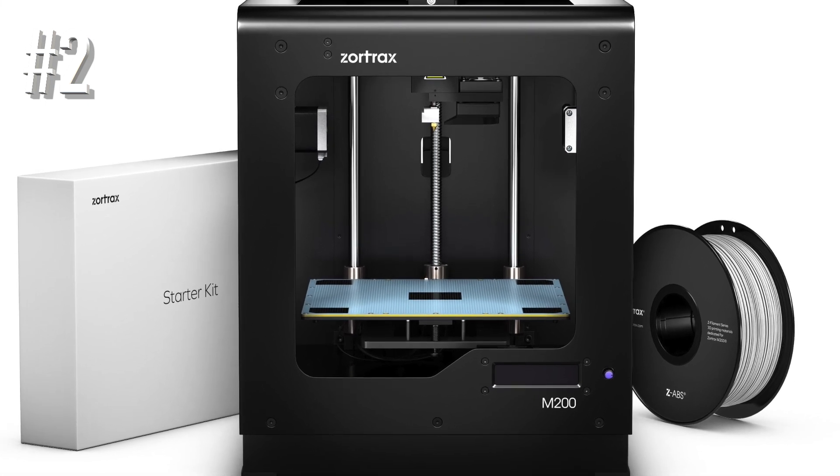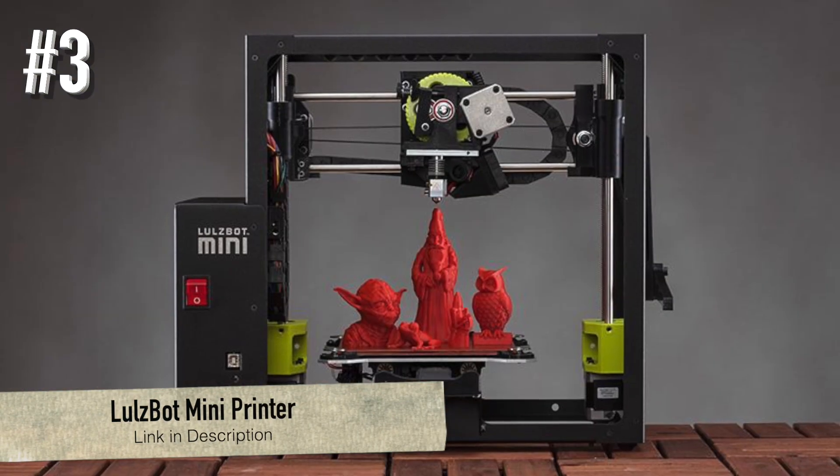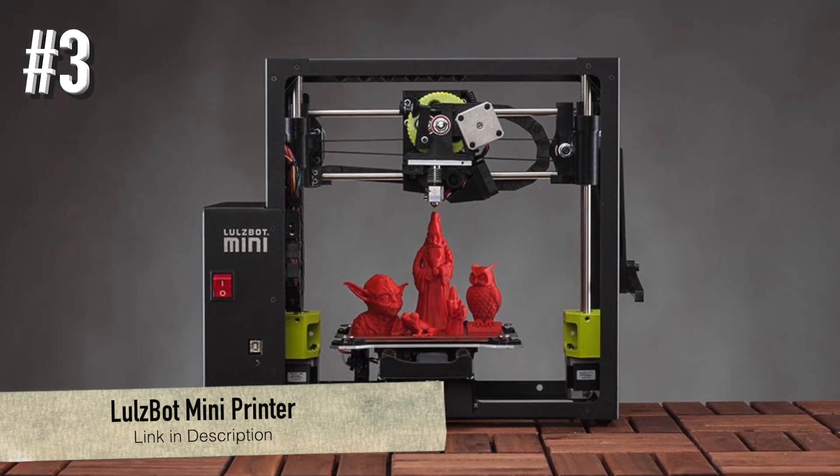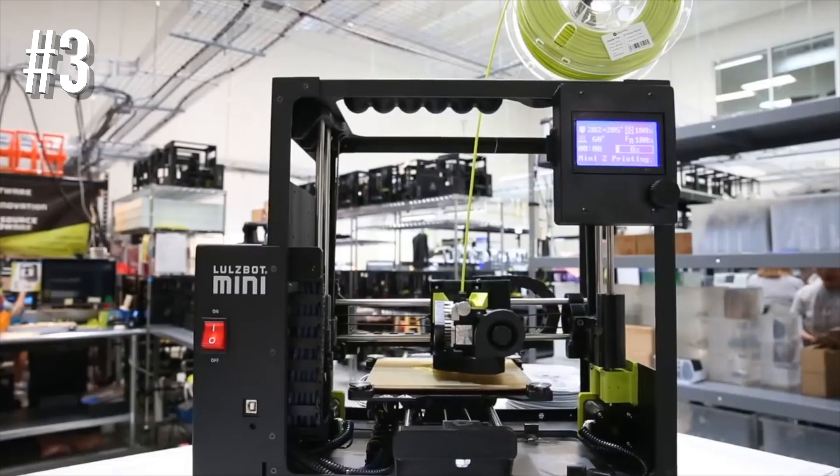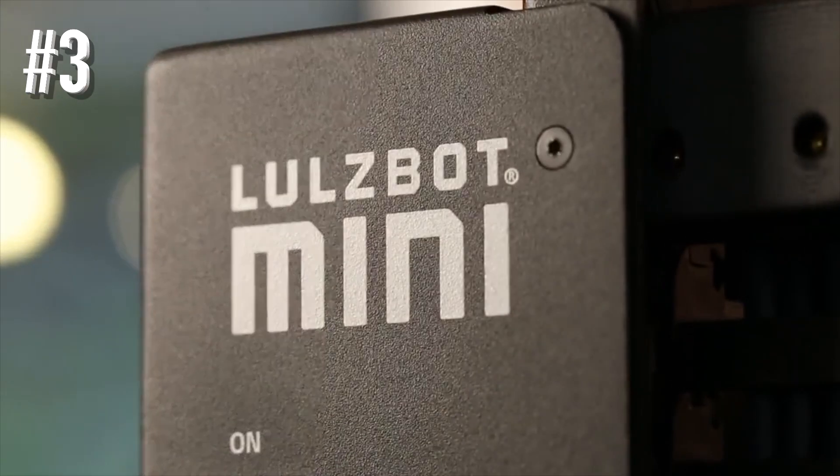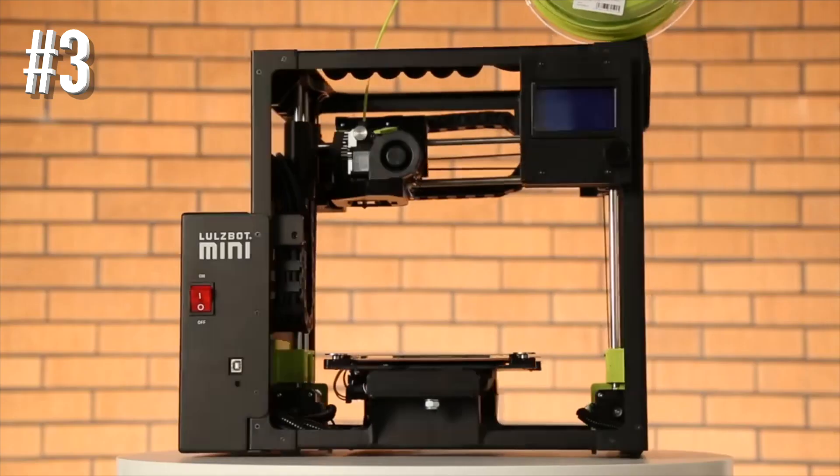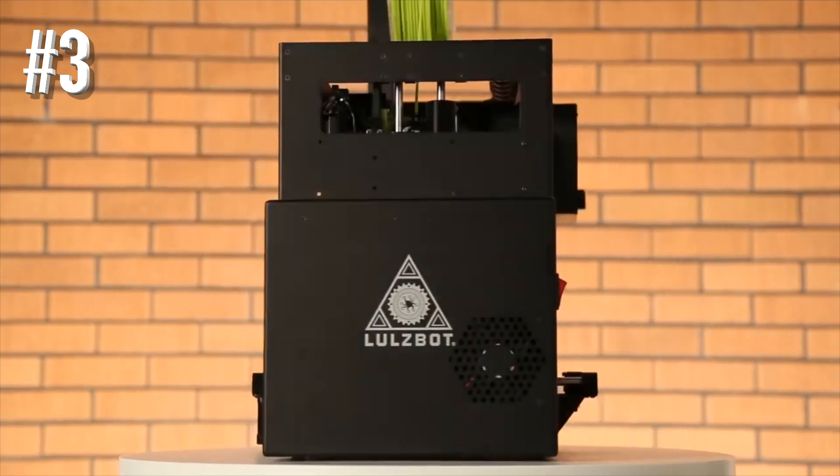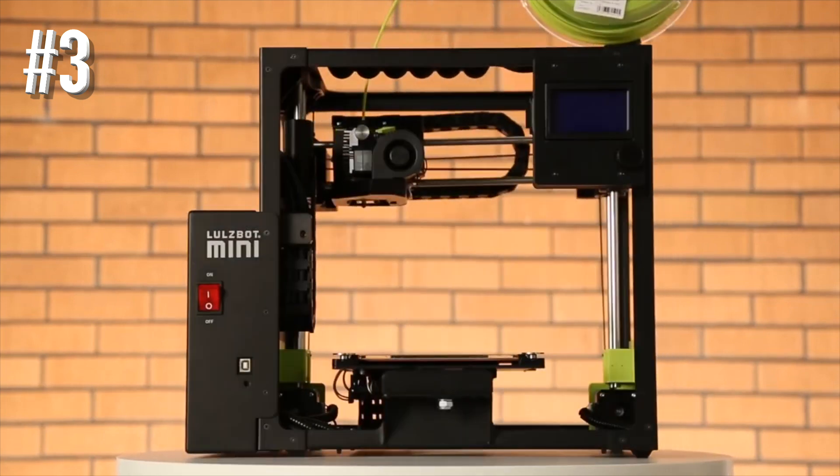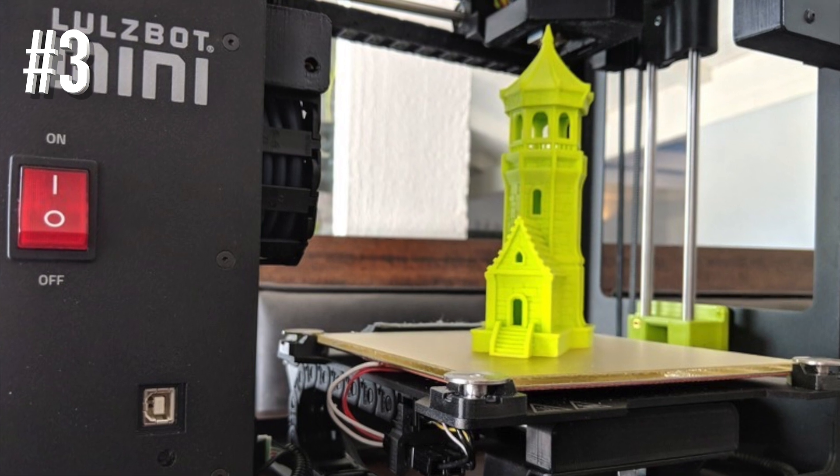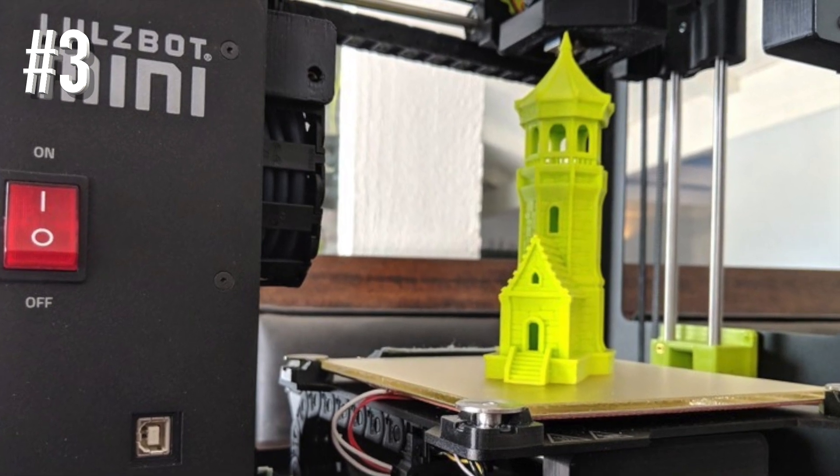Number three: Lulzbot Mini Printer. Lulzbot Mini is a high-quality and high-performance desktop 3D printer that uses the so-called fused deposition modeling, which is a type of rapid prototyping. This is pre-assembled and fully calibrated. In addition, it has a self-cleaning nozzle and a self-leveling tray, so it's ready to print out of the box.